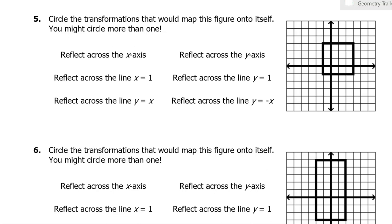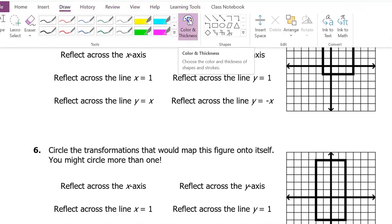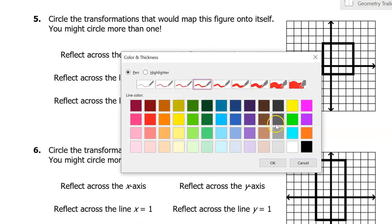In this video, we are going to talk about mappings. So we will be saying things like, how do you map this figure onto itself? That means what transformation could you do to this square that would leave it looking exactly the same? So when you're talking about reflections that will map a shape back onto itself, you're really talking about lines of symmetry. So look for lines that will split this image right down the middle.